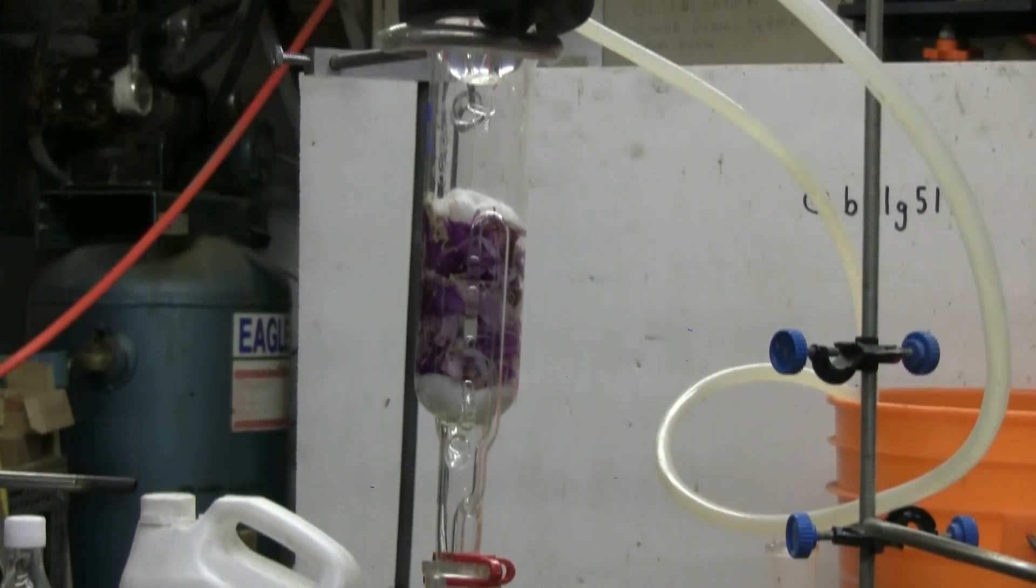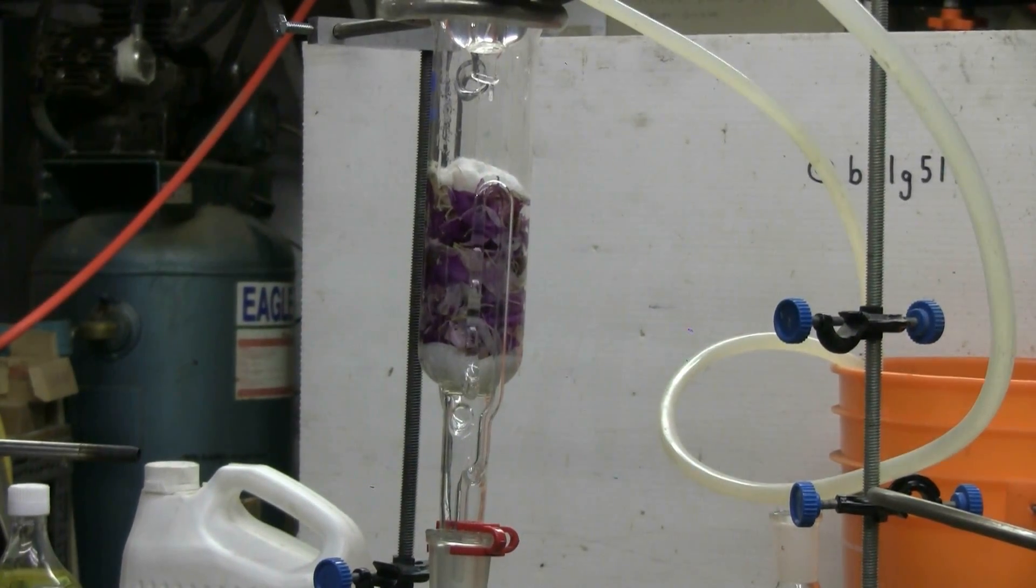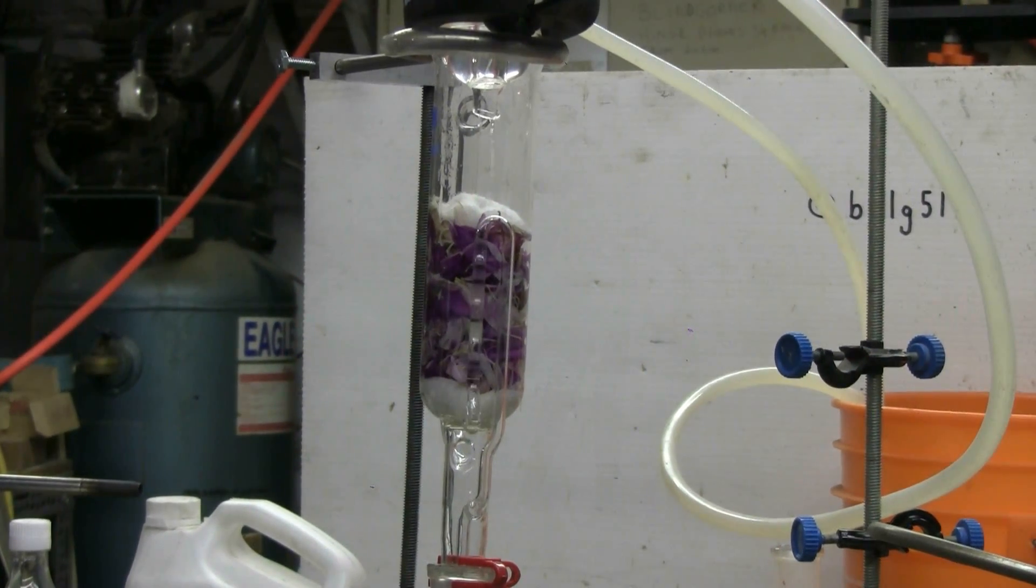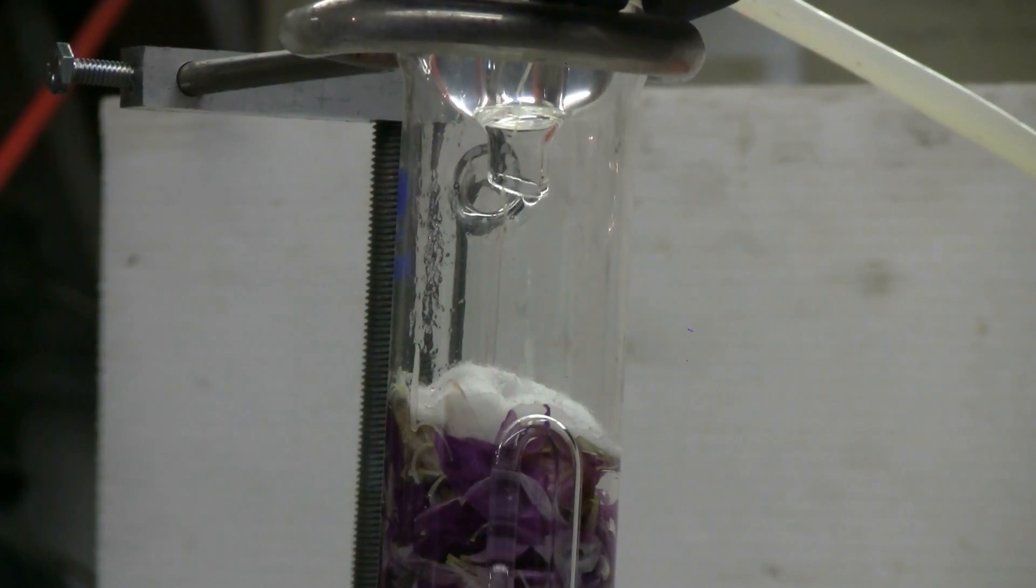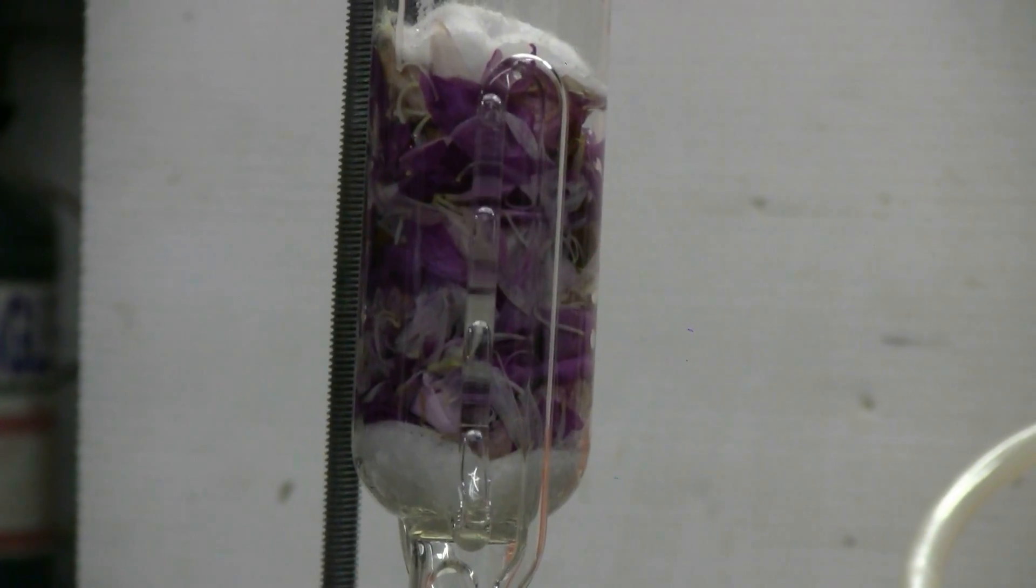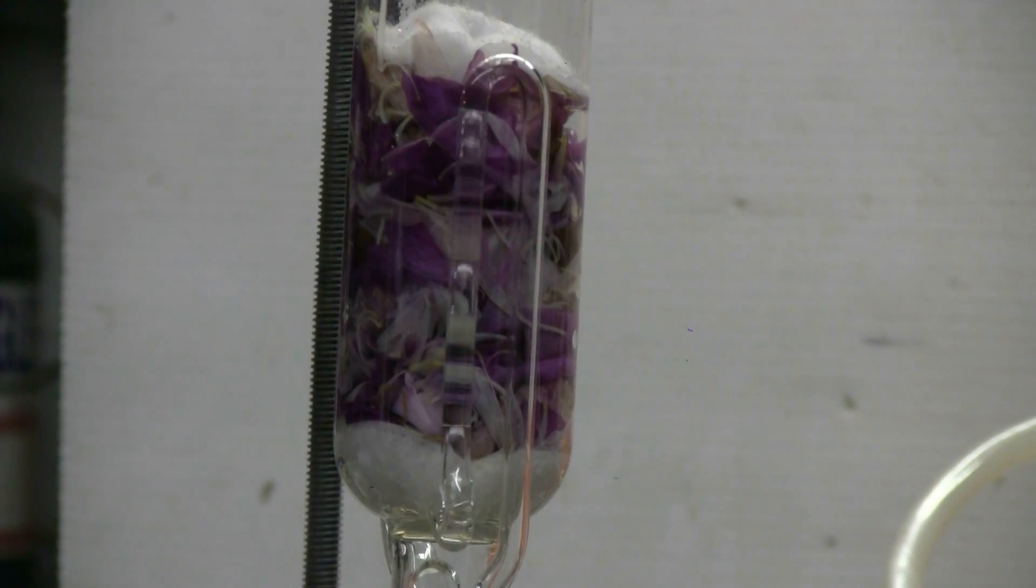The process is beginning its first cycle and we can see that ether is condensing in the Allihn condenser and dripping down into my Soxhlet chamber that contains a sample of these colorful peony flower petals.